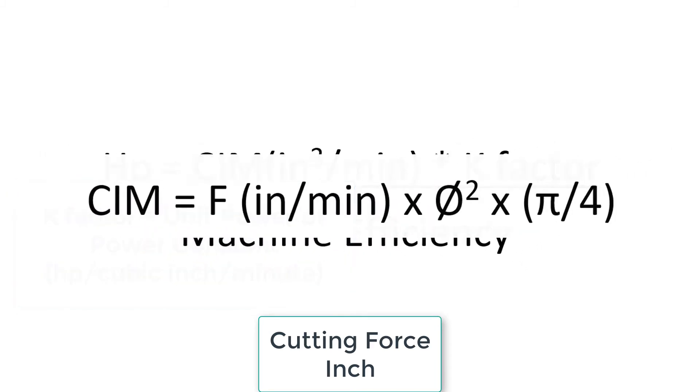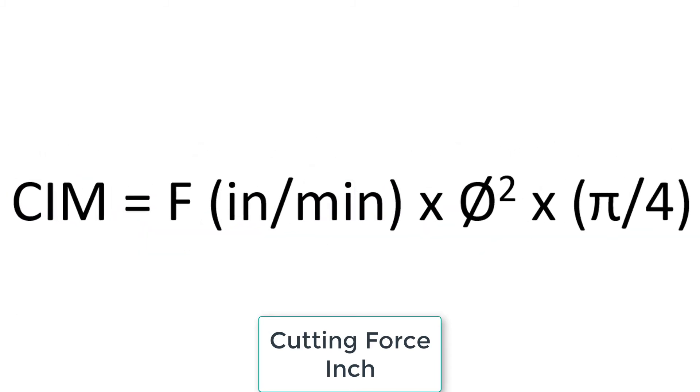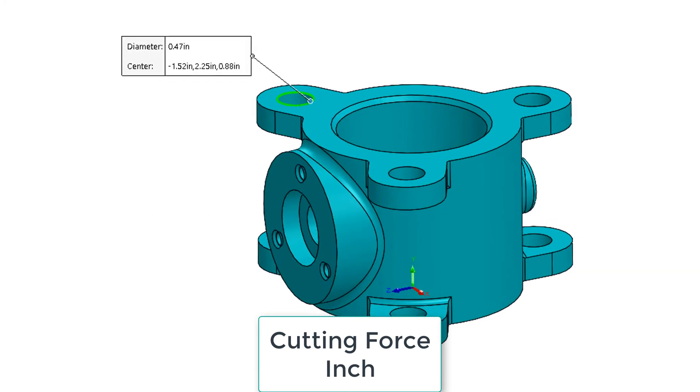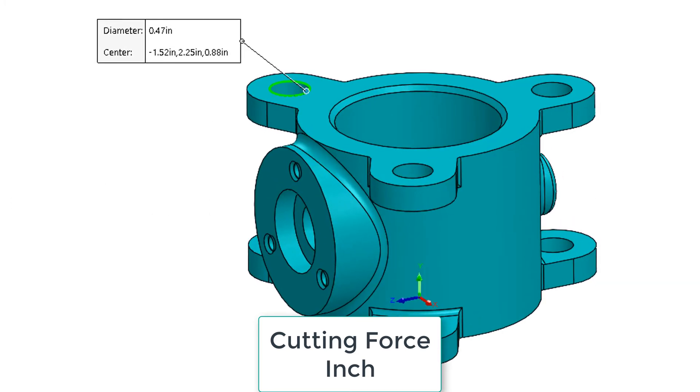To calculate the cubic inches per minute of material removal we multiply the tool feed rate in inches per minute times the tool diameter squared times pi over four. Now that we know all of the formulas required let's do a sample calculation.